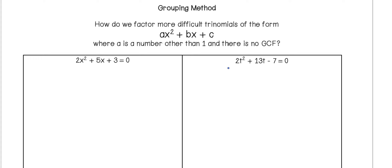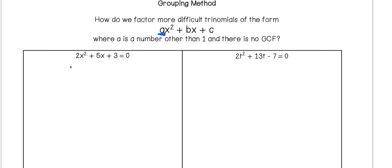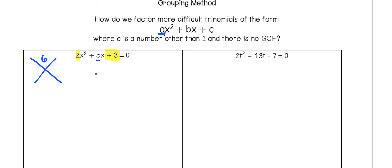When we're looking at trinomials where the leading coefficient is no longer just a 1, we need to figure out what factors we're looking for. Looking at this first example, 2X squared plus 5X plus 3, it's going to be very similar to what we did, but the first step is just a little different. Rather than finding factors of 3, we're going to take 2 times 3, which gets us 6, and then we're still going to use that middle coefficient of 5. So we want to find factors of 6 that add to 5, and that would be 3 and 2.